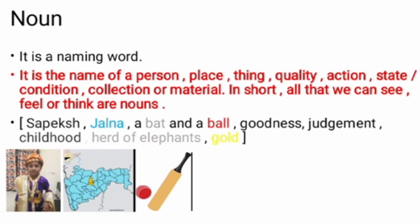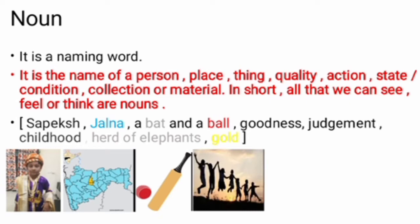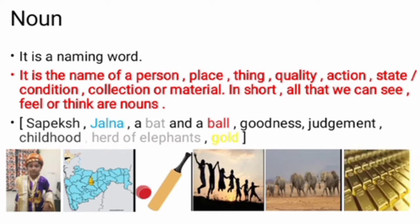Goodness and judgment, these two are abstract nouns and that's why we can't see them. Childhood, this is a very energetic stage in our life. Herd of elephants. And the last one, gold. This is a material noun. Now, there are five kinds of nouns.